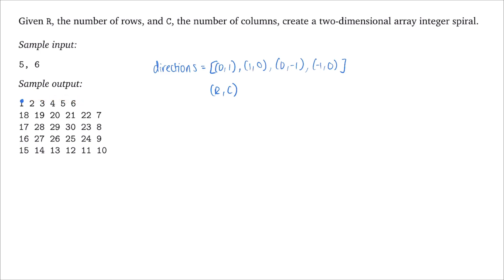The moment we get to 6, there's no more path in front of us — we can't go beyond the boundary, so we turn to the next possible direction, which is downward: increasing the row number without changing the column. We keep going down until we reach 10, and then we move to the next direction. Every time we hit a boundary or an already-encountered number, we change direction.